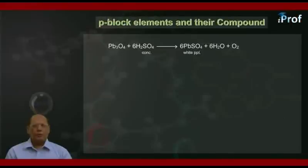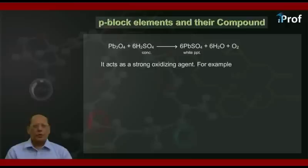Pb3O4 plus 6H2SO4 concentrated give 6PbSO4, that is a white precipitate, plus 6H2O plus O2. It acts as a strong oxidizing agent. For example,